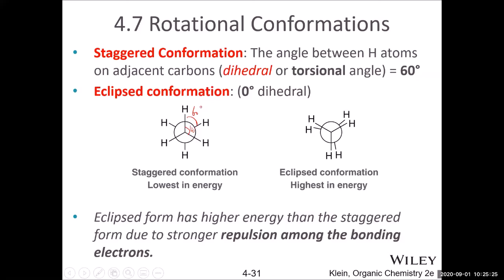If you rotate along the carbon–carbon bond, you get the eclipsed conformation. The eclipsed conformation has the highest energy because there is strong repulsion between the bonding electrons of the hydrogens. The eclipsed conformation has the highest energy; the staggered has the lowest energy.